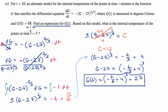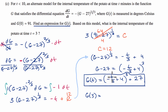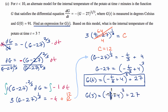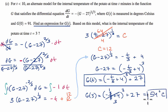Now the easy part: what is the internal temperature at t equals 3? g of 3 equals negative 3 over 3 plus 4, cubed, plus 27. That's negative 1 plus 4, which is 3. So 3 to the third power is 27, plus 27 equals 54 degrees Celsius. And we are done.